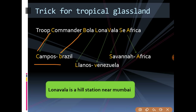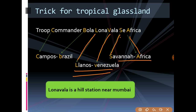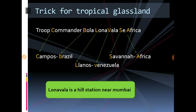'L' from 'Lonavala' is for Llanos and 'V' from 'Lonavala' is for Venezuela — Llanos is found in Venezuela. 'S' from 'se' is for Savannah and 'A' from 'Africa' stands for Africa itself — Savannah is found in Africa. Note that Lonavala in the trick refers to the hill station located near Mumbai.